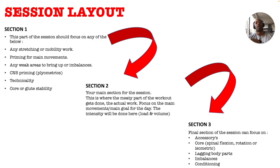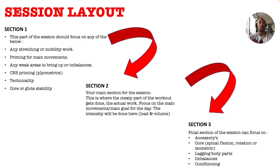Section two is the main section — this is where the meaty part of the workout gets done. The actual work that drives neural and hypertrophic response and adaptations. Focus on the main movements, the main goal for the day. Intensity — load and volume — is done here. Section three is the final section, which focuses on accessories, core work including spinal flexion, rotation, or isometric movements, any lagging body parts, imbalances, or conditioning work.